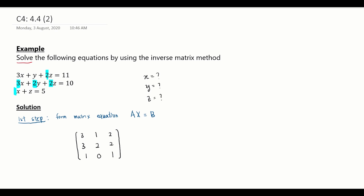Matrix X is our unknown vector containing x, y, and z. Matrix B is the column of constants on the right-hand side: 11, 10, 5. So we have the matrix equation AX equals B.